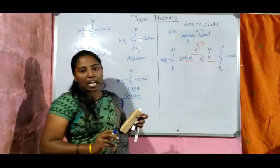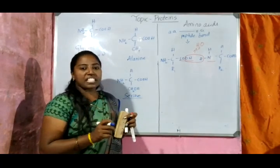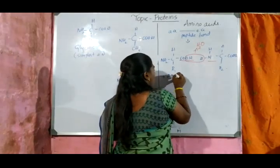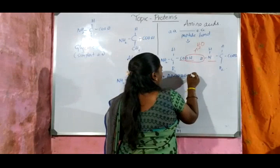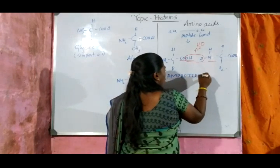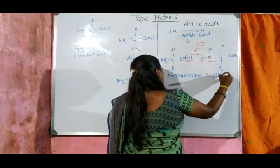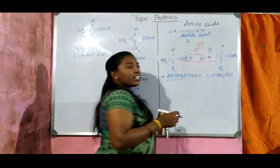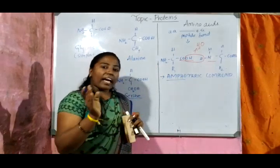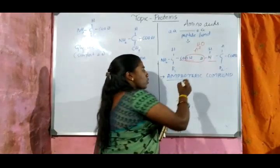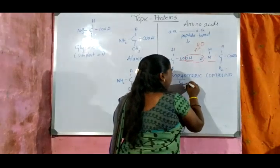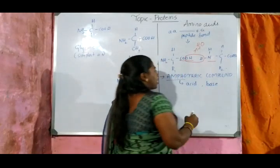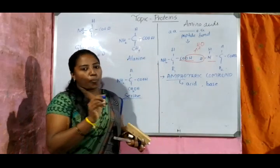Amino acids are also called amphoteric compounds. Amphoteric means they act as both an acid and a base — the carboxyl group gives acidic nature and the amino group gives basic nature. Hence amino acids are called amphoteric compounds.